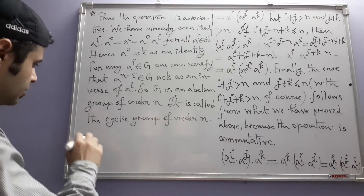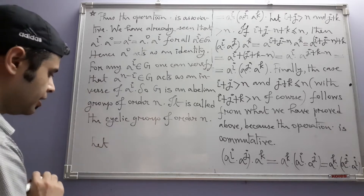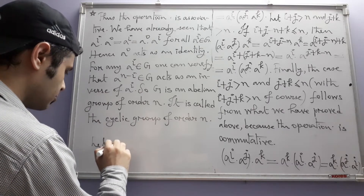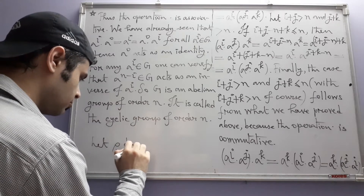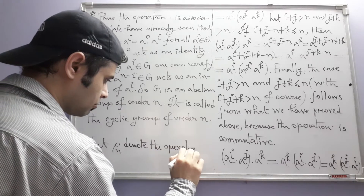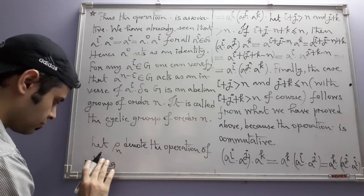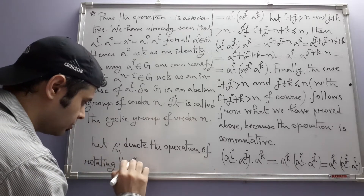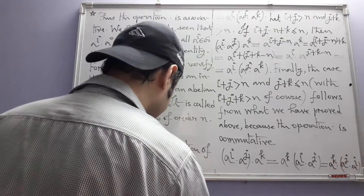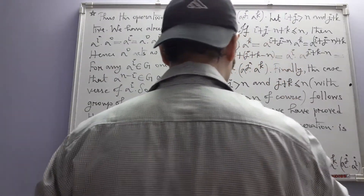So n is still a positive integer. Let ρₙ denote the operation of rotating the x-y plane about the z-axis.